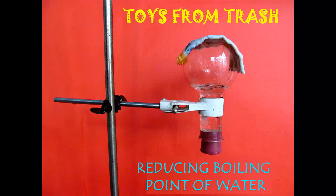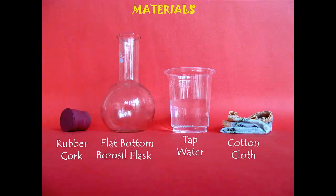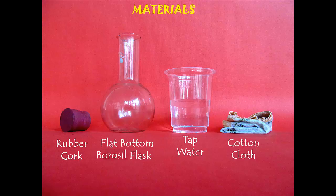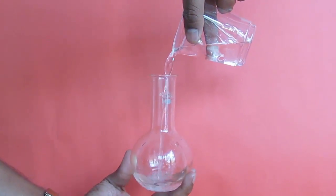Have you ever wondered that you can actually boil water at less than 100 degrees? For this you need a flat bottom borosil flask, a rubber cork, and some water.